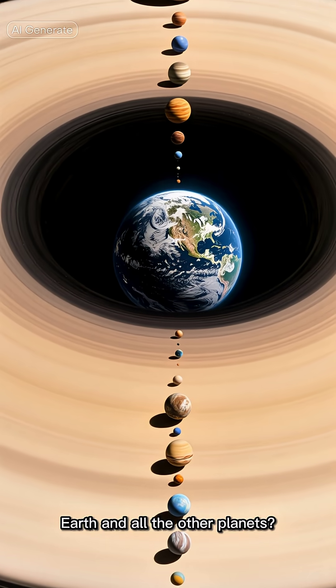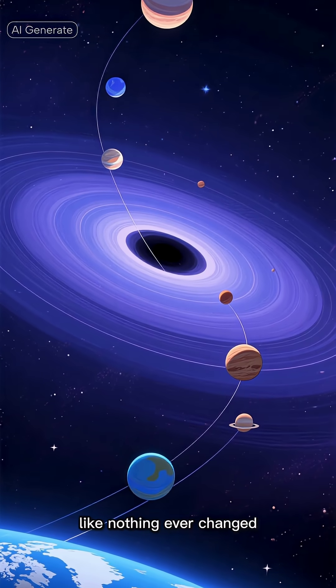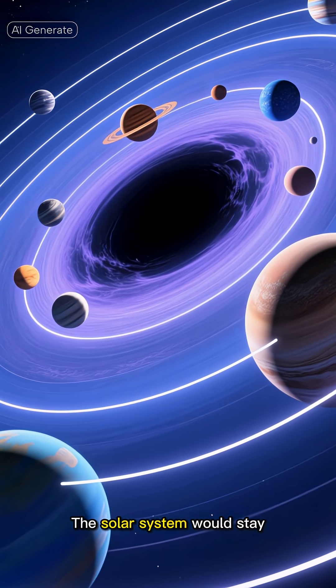So Earth and all the other planets? We just keep orbiting this new tiny dark point in space like nothing ever changed. We wouldn't get sucked in. The solar system would stay perfectly intact.